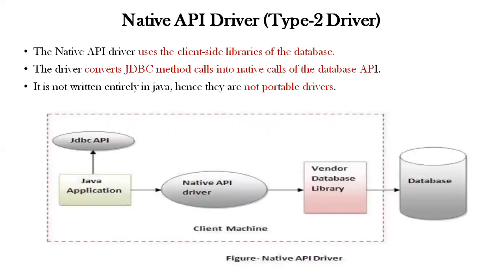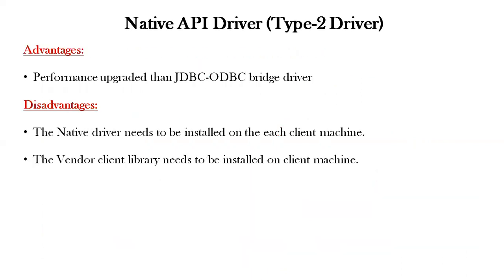The native API driver is the Type 2 driver. The native API driver uses client-side drivers of the database. The driver converts JDBC method calls into native calls of the database API. It is not written entirely in Java, so they are not portable drivers. The JDBC API connects the Java application through the native API driver to the vendor database driver, which connects to the database on the client-side machine. Advantages: performance is better than the JDBC-ODBC bridge driver. Disadvantages: the native driver needs to be installed on each client machine, and the vendor client library needs to be installed on the client machine.